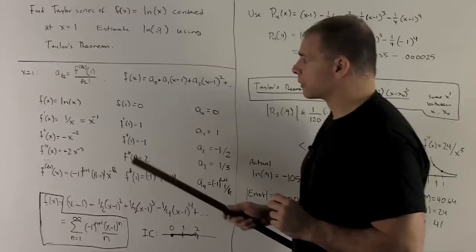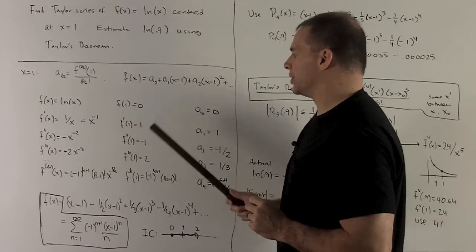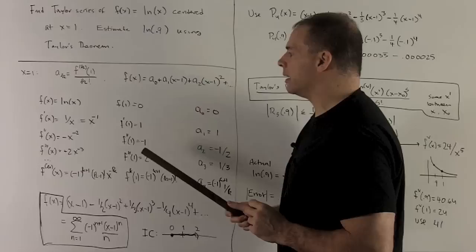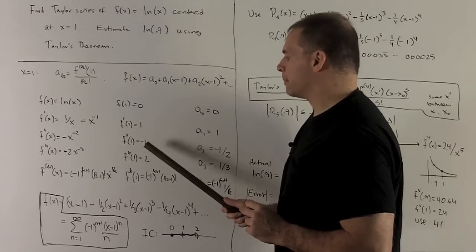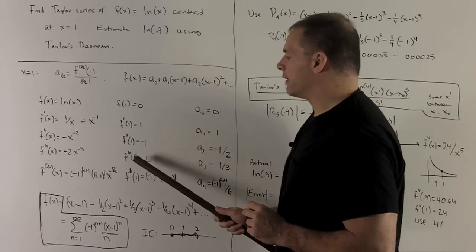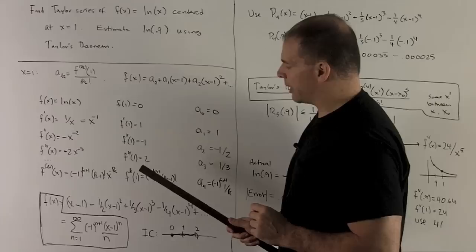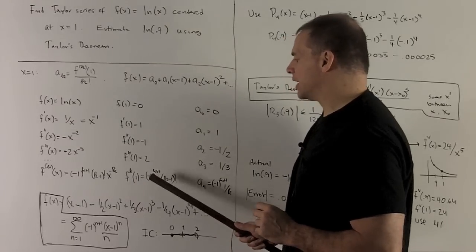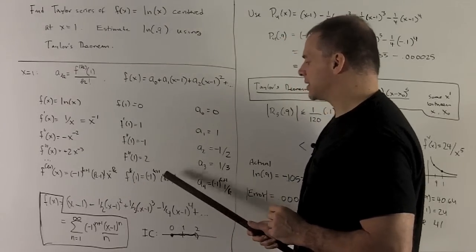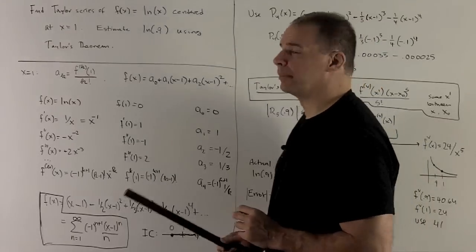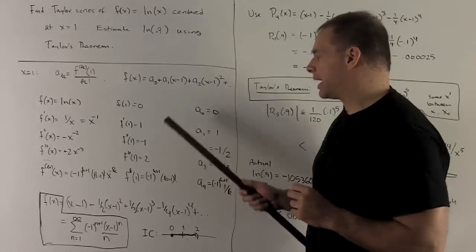So we're going to evaluate all of these at 1. f of 1 is 0, f prime of 1 is 1, f double prime at 1 is minus 1, third derivative at 1 is going to be 2, and then we get down to the kth derivative at 1 is going to be minus 1 to the k plus 1 times k minus 1 factorial.